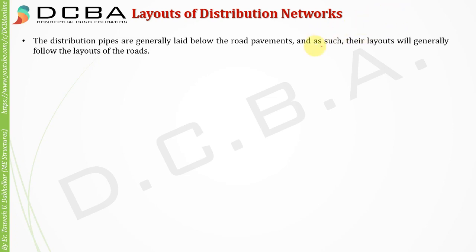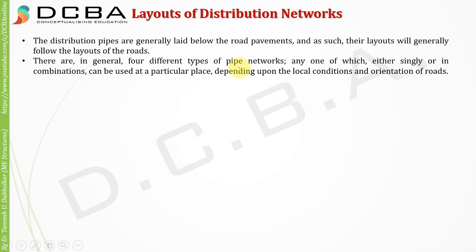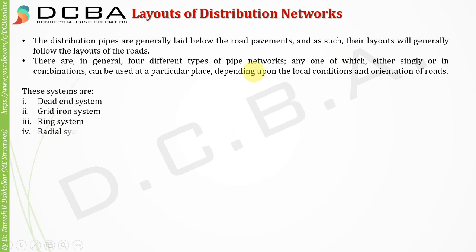There are in general four different types of pipe networks, any one of which — either singly or in combination — can be used at a particular place depending upon local conditions and road orientation. The four types are: dead end system, grid iron system, ring system, and radial system.